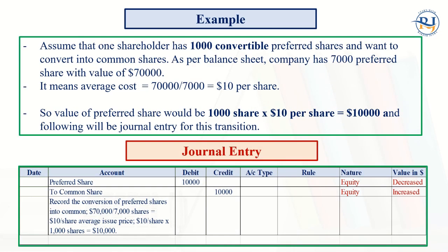For example, one shareholder holds 1,000 convertible preferred shares and wants to convert to common shares. As per the balance sheet, the company has 7,000 preferred shares valued at $70,000, so the average cost is $10 per share ($70,000 ÷ 7,000). That one shareholder's 1,000 shares are worth $10,000. The journal entry is: debit Preferred Share $10,000, credit Common Share $10,000 — eliminating the preferred share from the balance sheet and increasing common share by $10,000.